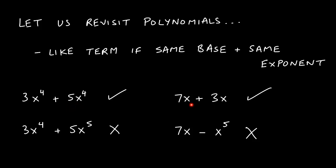7x plus 3x — the variables are the same and so are the powers, 1 and 1 — so we can add these together and get 10x. However, x to the fourth and x to the fifth: even though the bases are the same, the powers are not, so we cannot add these together. Similarly, 7x minus x to the fifth — the bases are the same but the powers are not, so we cannot combine these two terms because they are not like terms.